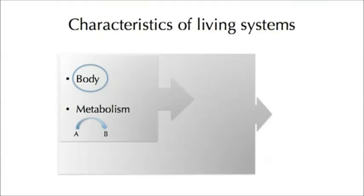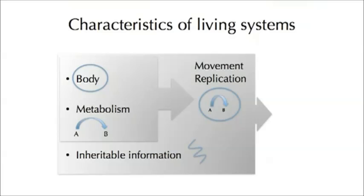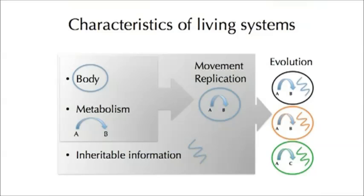Life also has a metabolism — a process by which life can convert resources from the environment into building blocks, so it can maintain and build itself. Life also has a kind of inheritable information. We as humans store our information as DNA in our genomes, and we pass this information on to our offspring. If we couple the body and metabolism, we can come up with a system that could perhaps move and replicate. If we couple these to inheritable information, we can come up with a system that would be more lifelike and perhaps evolve. So these are the things we will try to do in the lab.